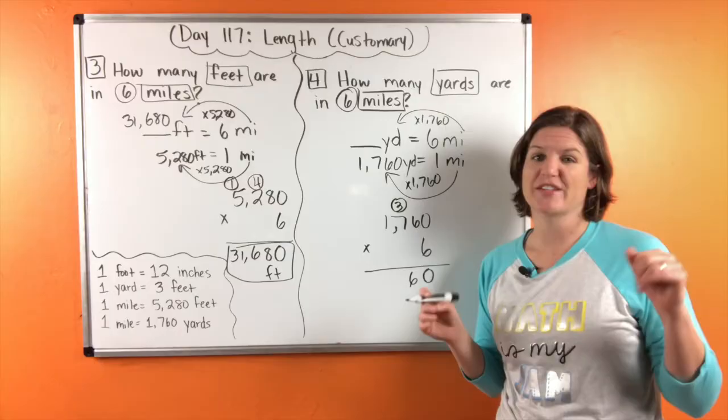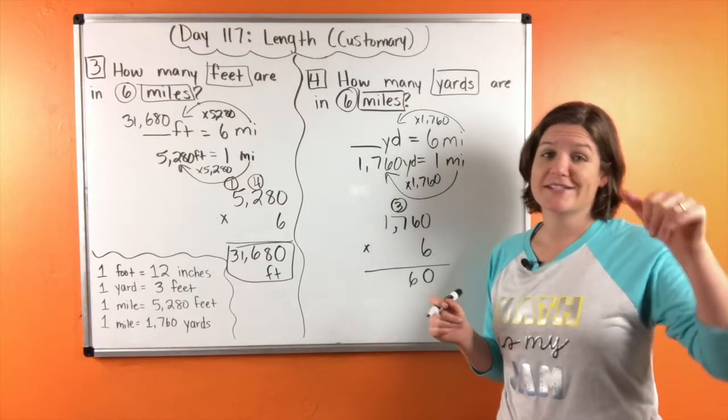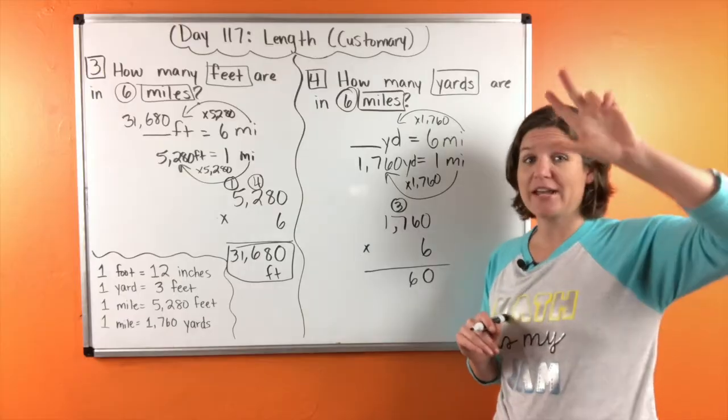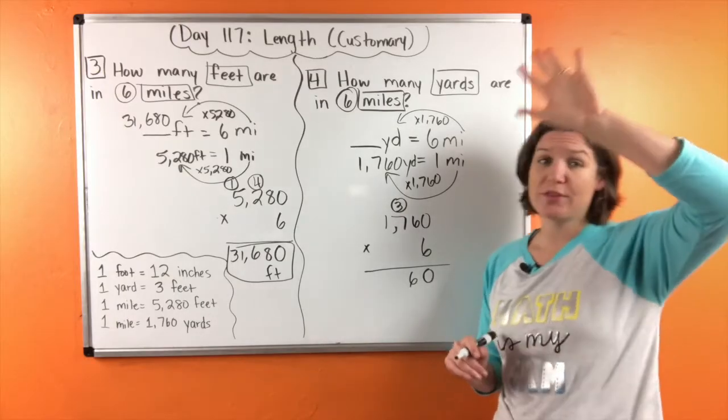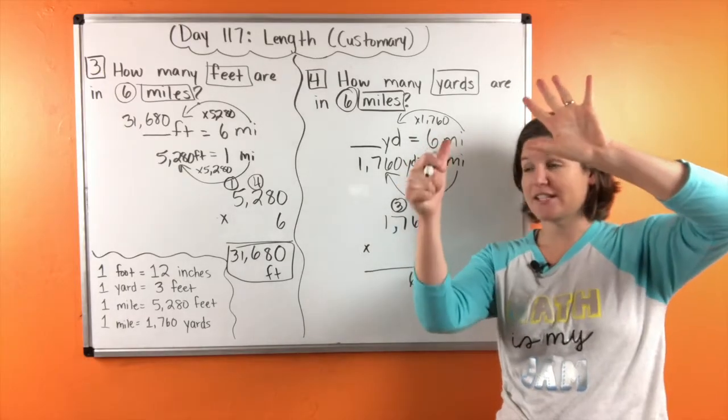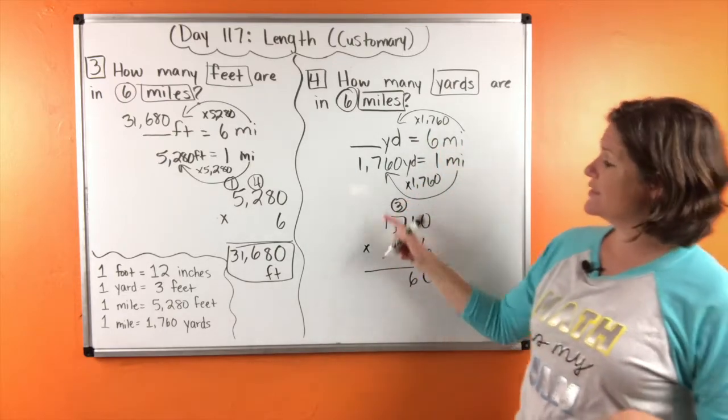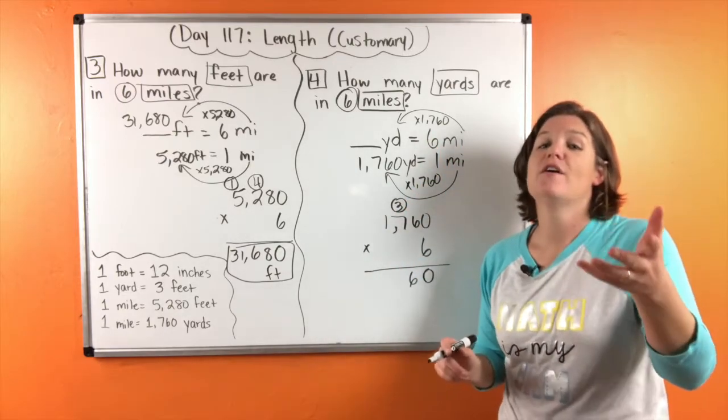Six times seven is 42 plus 3 is 45. Six times one is six plus four is 10.